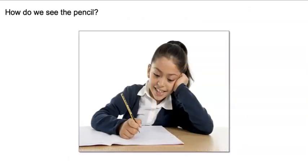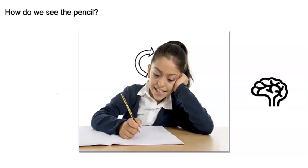So, how do we see the pencil? Light rays from light sources, such as the sun or a light in a room, are reflected off the surface of the pencil. Then those light rays enter our eyes. When the light rays enter our eyes, information is sent to the brain, and the brain recognizes the object as a pencil.